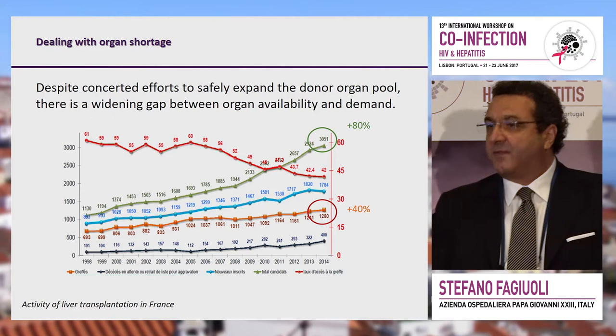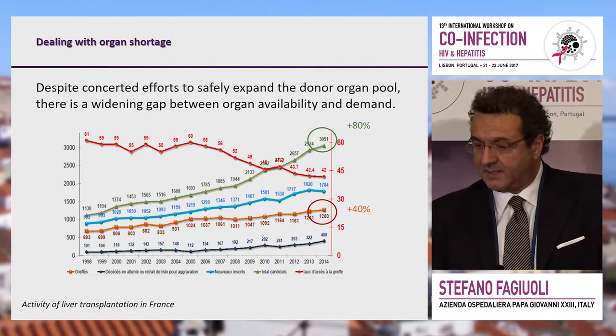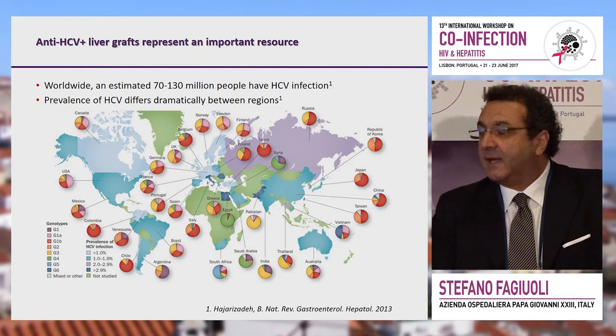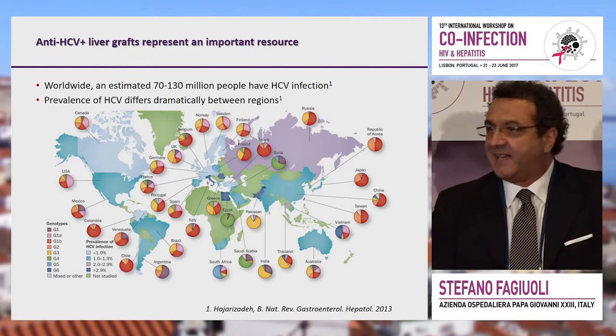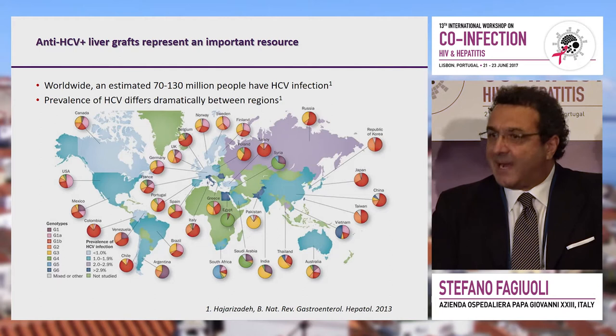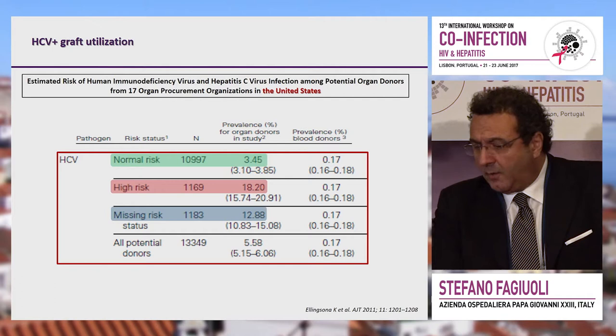We know that there is a gap between the need for organs and the number of patients in need for transplants. So the use of HCV positive organs is a way to expand the pool. HCV is widely diffused around the world with very different epidemiologies in terms of prevalence and genotypes. We shouldn't use a rule valid for everybody — every single area should use rules adapted to the local epidemiology.